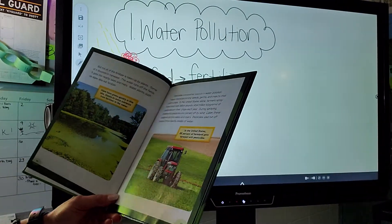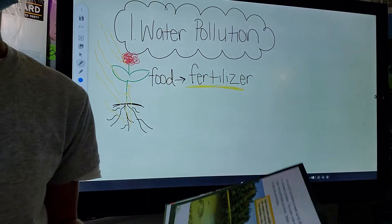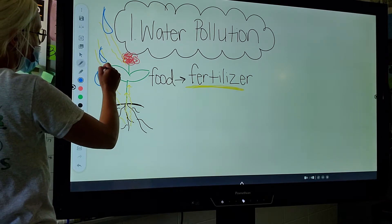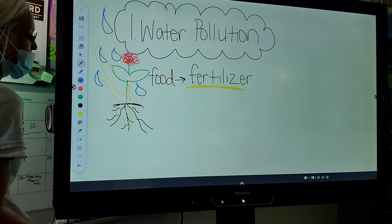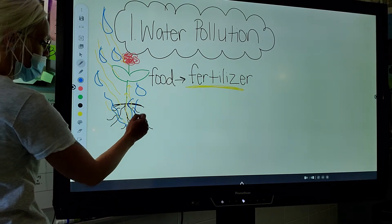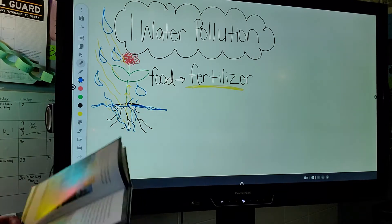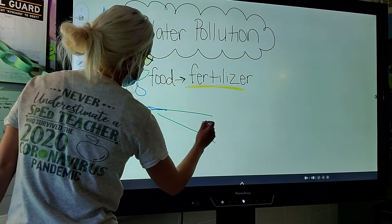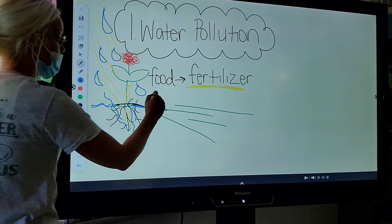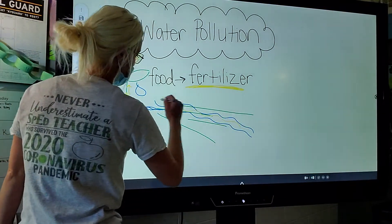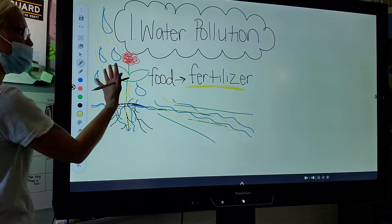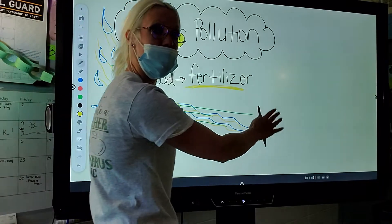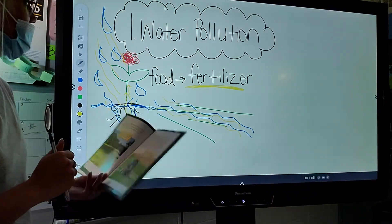But not all of the fertilizer is taken up by plants. Some of it dissolves in rainwater. What happens is it rains. Remember how we said the rain goes into the ground? The rain and the fertilizer get washed away — this is called runoff. The water runs off.